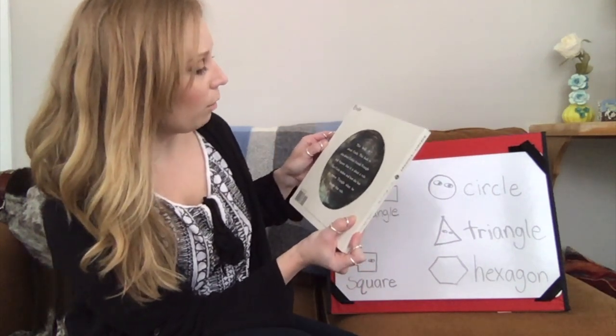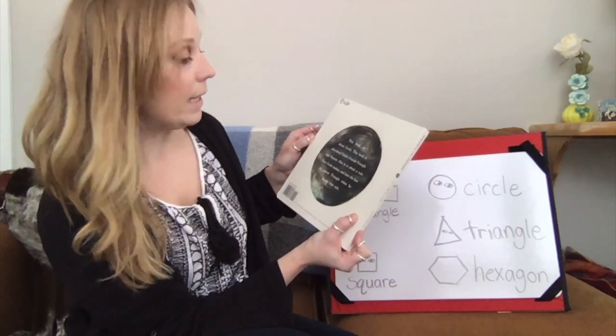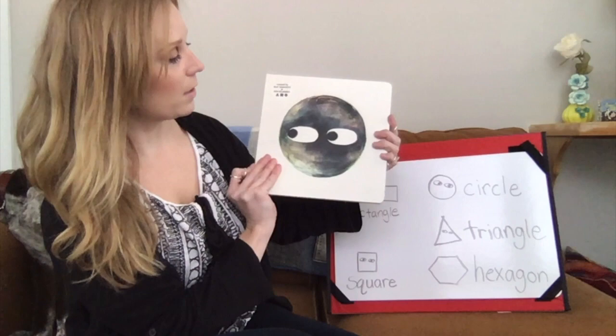Also, it is about a rule that Circle makes and how she has to rescue Triangle when he breaks that rule. Circle.